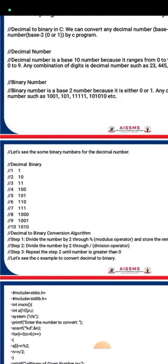Third step: repeat steps 1 and 2 until the number is greater than 0. Last one is to stop the procedure. Let's see the example to convert decimal to binary.